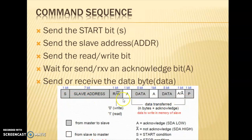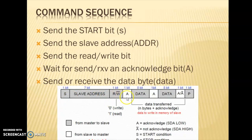This is the data frame of I2C format. We have a start bit, then a 7-bit slave address, and the 8th bit will be read or write — 0 for write and 1 for read. These 9 bits are sent by the master, and the acknowledgement bit is sent by the slave.